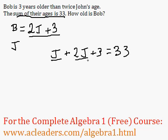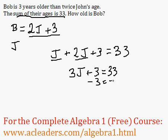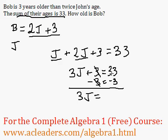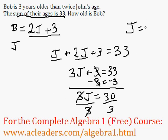So J plus 2J is 3J, plus 3 equals 33. Now I can take 3 away from both sides of the equation. So 3J is equal to 33 minus 3, which is 30. Now I can divide both sides by 3, and J is going to be 30 over 3, which is 10. So John's age is 10.